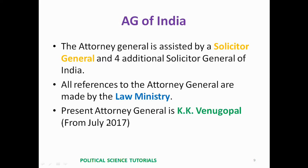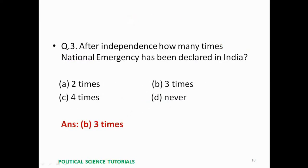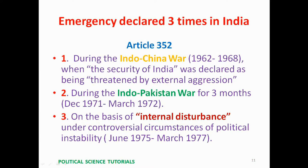Question 3: After independence, how many times has National Emergency been declared in India — two times, three times, four times, or never? Answer: three times. First, during the Indo-China War 1962 to 1968, when the security of India was declared as being threatened by external aggression. Second, for three months from December 1971 to March 1972.